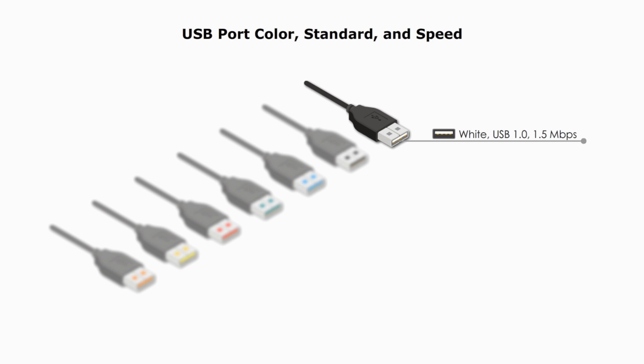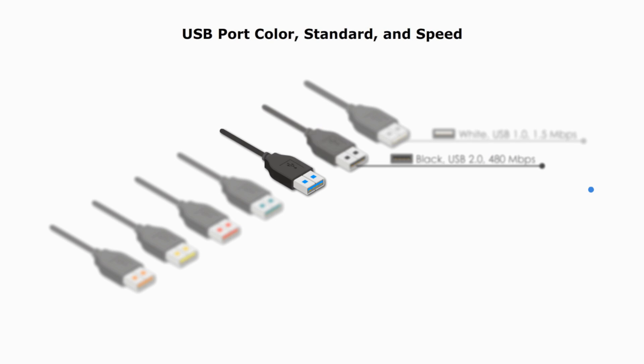The white color in the USB port indicates USB 1.0 or USB 1.1, a very early standard. Its transfer speed is up to 1.5 Mbps. You can still see this type of USB port for your mouse or your keyboard. The black color USB port indicates USB 2.0. It supports a transfer speed up to 480 Mbps. The blue port indicates USB 3.0. It can support a speed of 5 Gbps, about 10 times faster than USB 2.0.